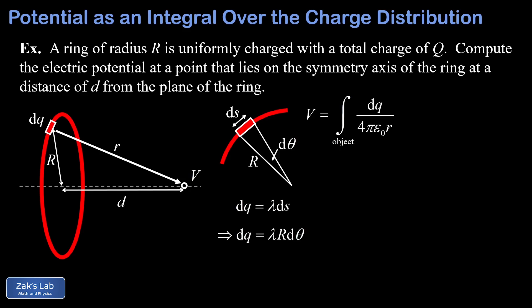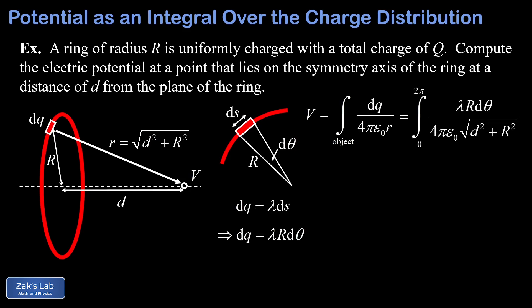To set up the potential integral we need the distance from the charge increment dq to the observation point — that's the little r in the integral. Using the Pythagorean theorem, little r can be replaced with the square root of d² + R². We then replace dq with λR·dθ, making θ our integration variable with limits 0 to 2π, tracing dqs around the entire circle. In the denominator we also replace r with √(d² + R²).